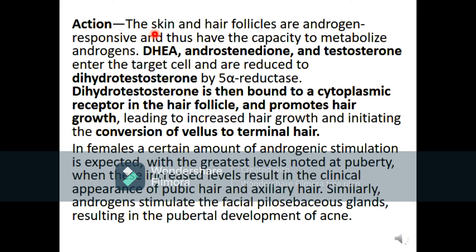Skin and hair follicles are androgen-responsive cells and have the ability to metabolize androgens. DHEA, androstenedione, and testosterone enter the target cell and are reduced to dihydrotestosterone (DHT) by the 5-alpha reductase enzyme. DHT binds to the cytoplasmic receptor found in the hair follicle, promoting hair growth and initiating the conversion of vellus hair to terminal hair.